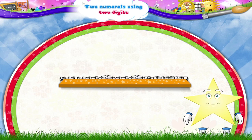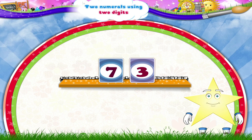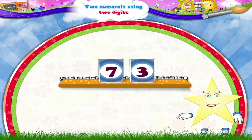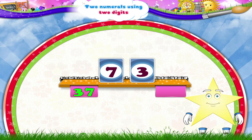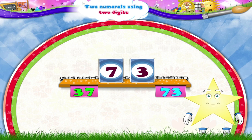What about seven and three, Sturry? Yes, the two numbers formed from the numerals seven and three are: three and seven — thirty-seven, and seven and three — seventy-three.